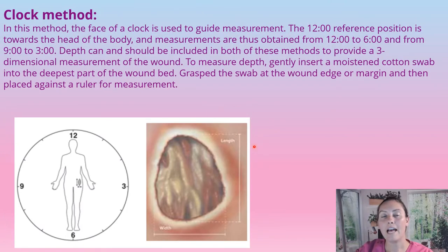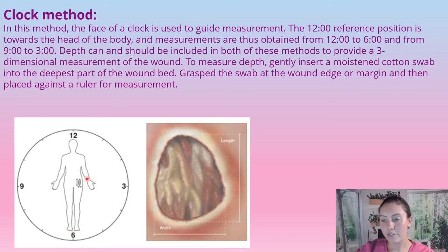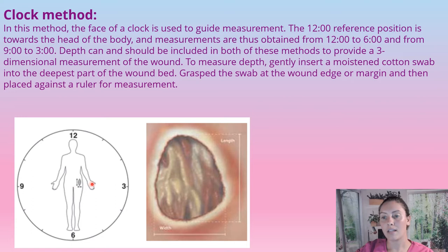Next we have the clock method. For this method, we picture the face of a clock where the head of the person is at 12 o'clock and the toes are at 6 o'clock. So for the wound on the hip here, you would measure from 12 to 6 — that's the length. And the width would be from 9 to 3, or 3 to 9.